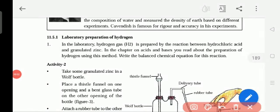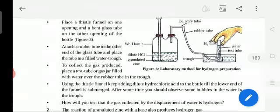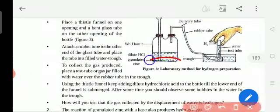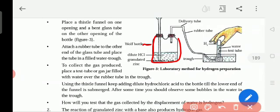Now we see the preparation of hydrogen, laboratory preparation of hydrogen. Hydrogen gas is prepared with the acid. How it is prepared, first we will see. This bottle is called a wolf bottle.